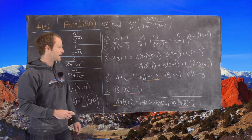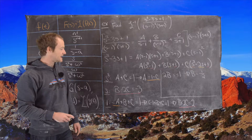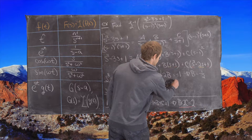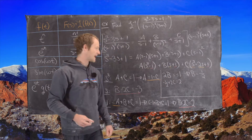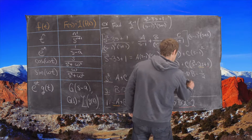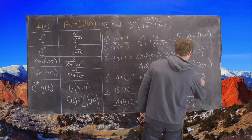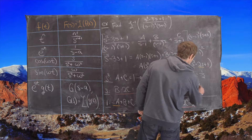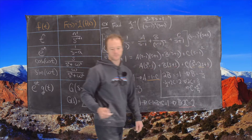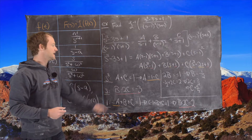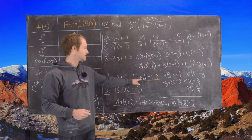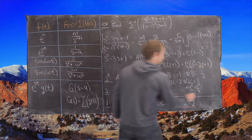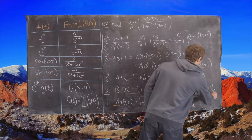With B equals negative one-half, we can easily find C. Plugging into B plus 2C equals 2: negative one-half plus 2C equals 2, so 2C equals five-halves, meaning C equals 5 over 4. Then A equals 1 minus C equals 4 over 4 minus 5 over 4, so A equals negative 1 over 4.